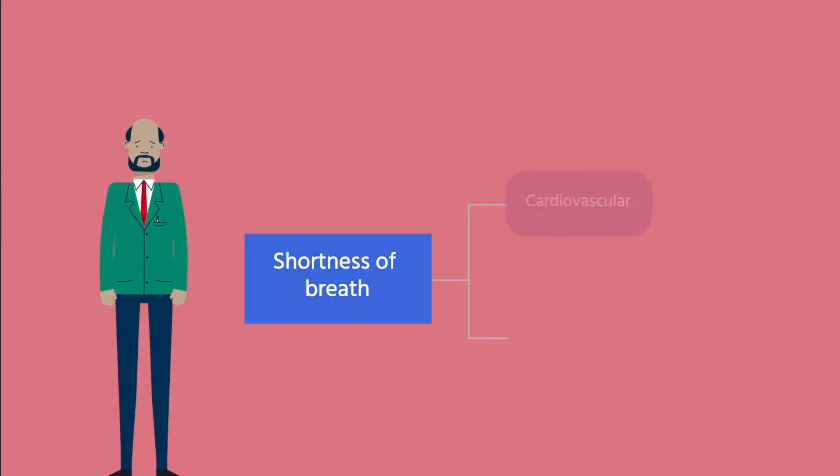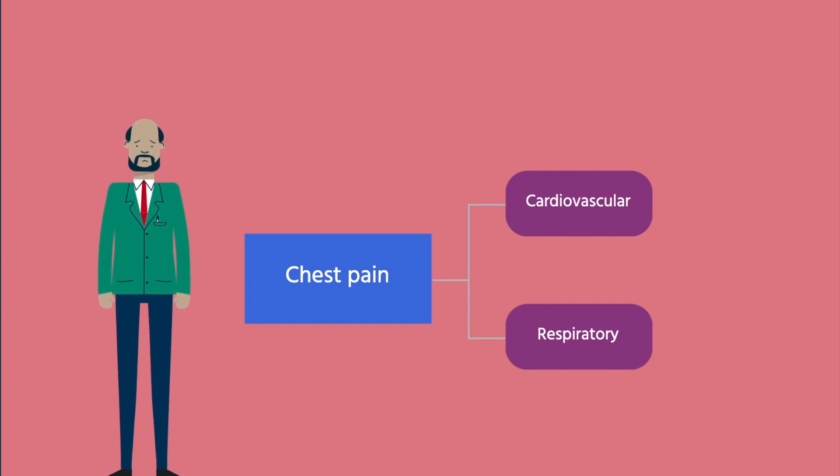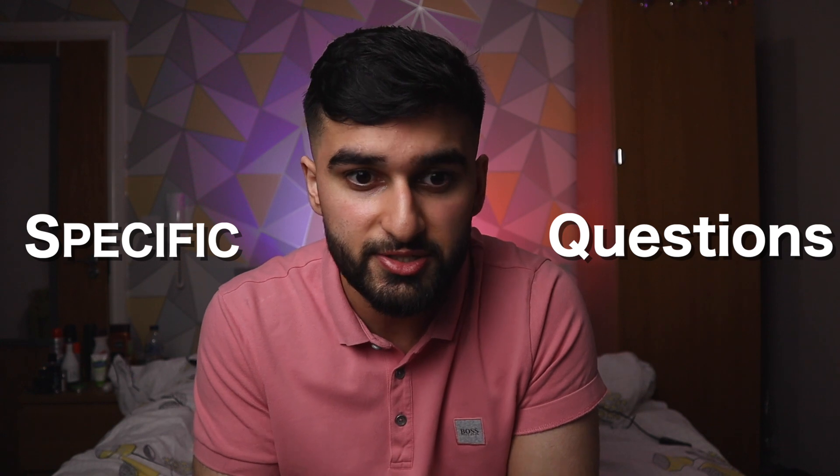Sometimes you need to be clever. Shortness of breath could be due to heart failure, so cardiovascular, or asthma, which is respiratory. Chest pain could be ischemic heart disease — cardiovascular — or pneumonia — respiratory. The way you differentiate is by asking specific questions in the station, such as: can you describe the pain? A dull, crushing pain is typically ischemic heart disease; a sharp pain can be respiratory. In my own OSCE I had to ask those specific questions to deduce what type of history I was taking.